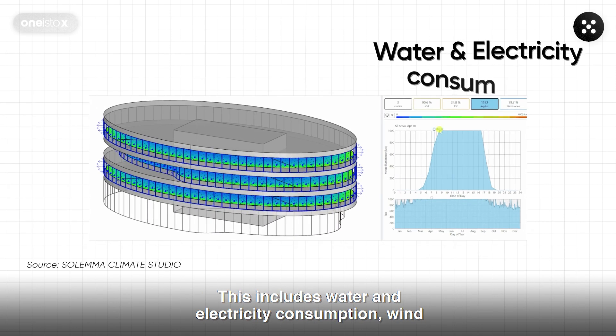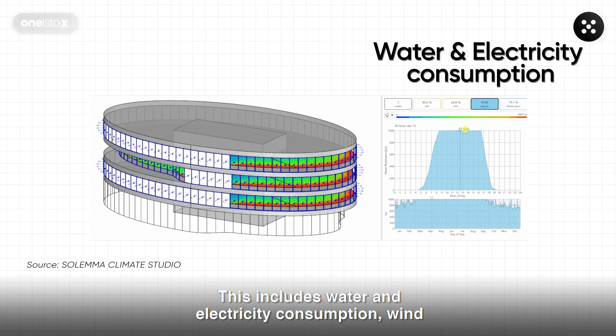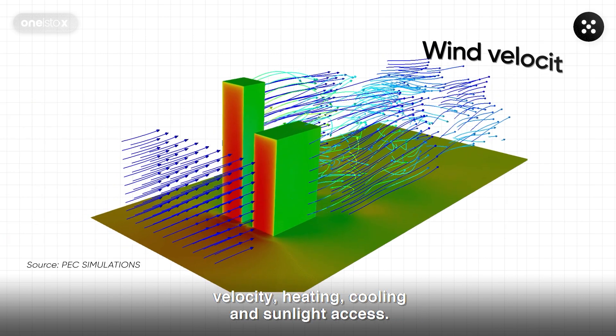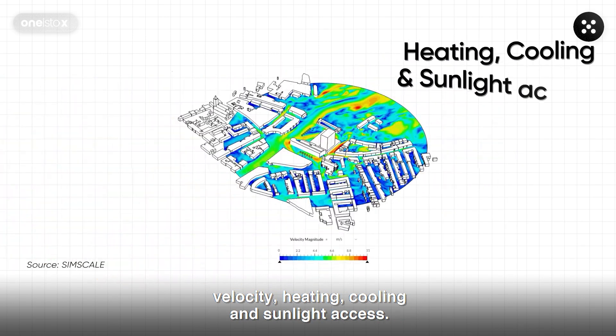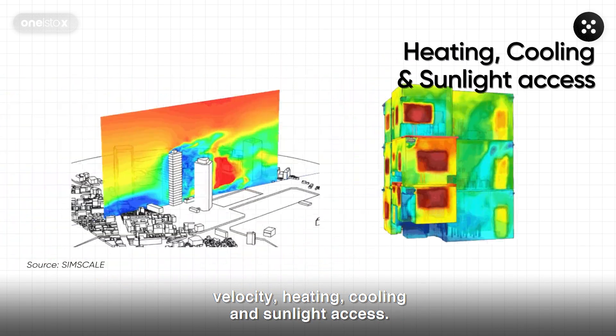The models are in 3D and they are assessed through the energy they dispense and consume. This includes water and electricity consumption, wind velocity, heating, cooling and sunlight access.